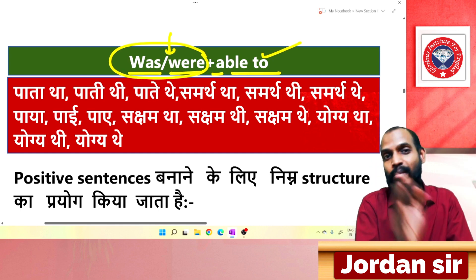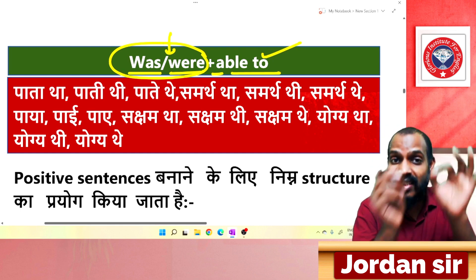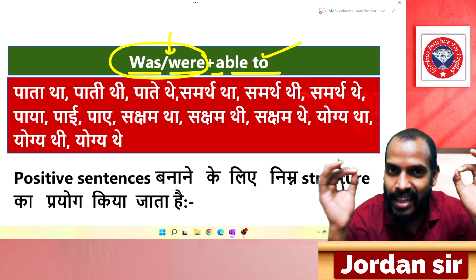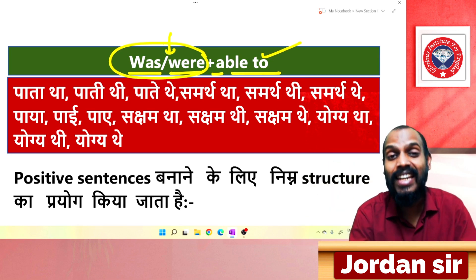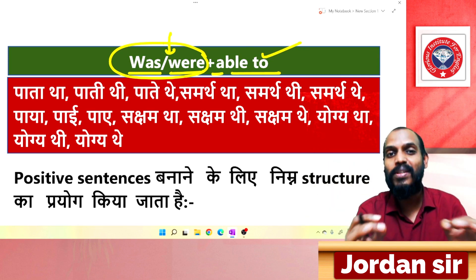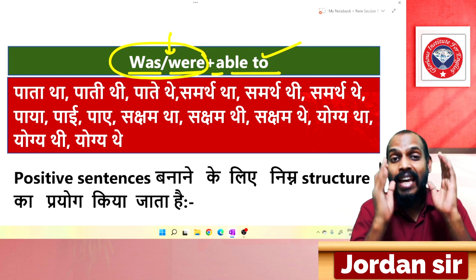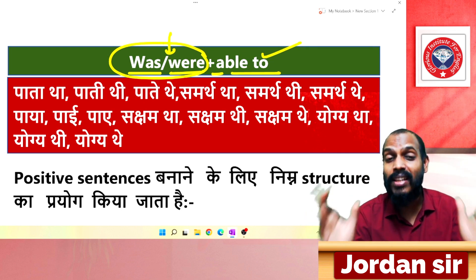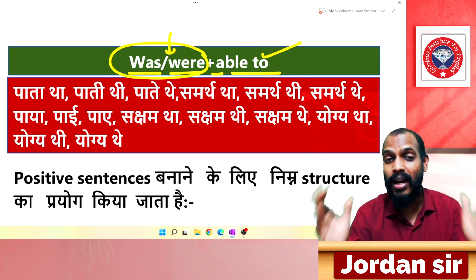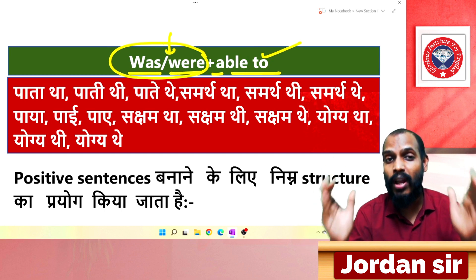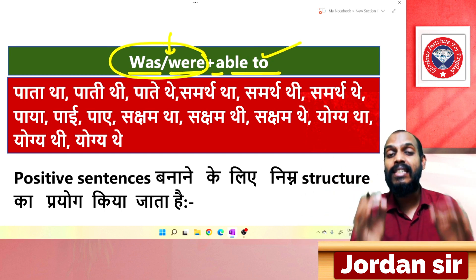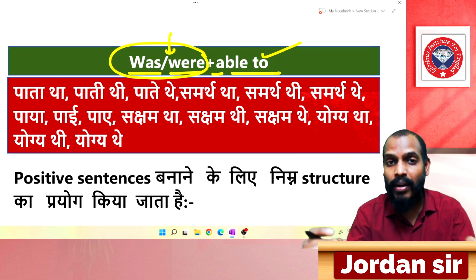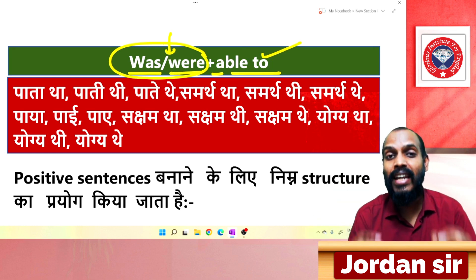The past tense auxiliary 'was' is used with singular subjects: he, she, it — and names like mother, father, brother, sister, everyone, everybody, somebody, someone, no one, nobody. Also with collective groups like group, team, army, government, family, and society — these all use 'was'.